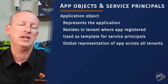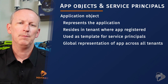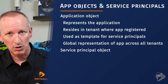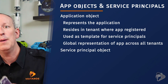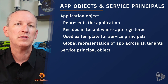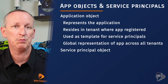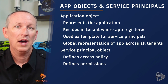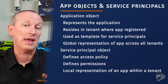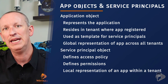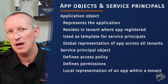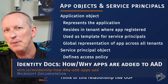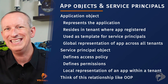The service principal object is created in every tenant where the application is actually used. To access resources secured by Azure AD tenants, the entity that wants access must be represented by a security principal — for users, these are user principals, while applications are represented by service principals. A service principal is the local representation or the application instance of a global application object in a single tenant or directory. This relationship can be thought of like traditional object-oriented programming: the application object is like a class, while the service principal object is an instance of that class.